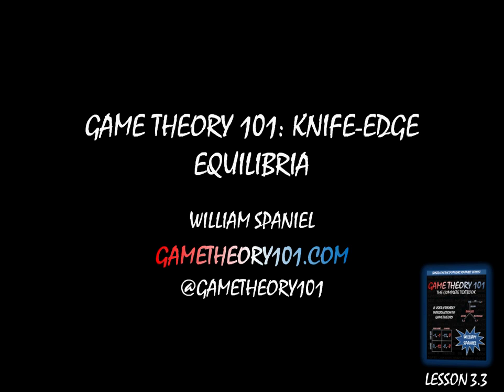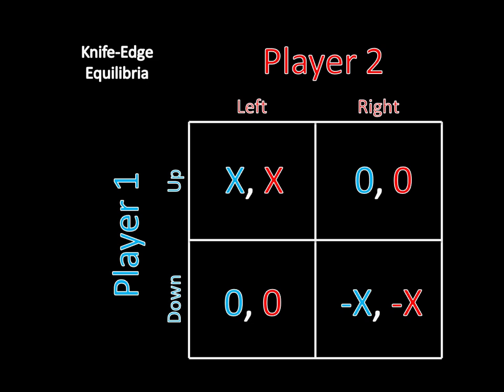The game that we're going to be looking at today is actually really simple to address this point. So the game looks like this. Both players have two strategies. Player 1 can go up or down. Player 2 can go left or right. If player 1 goes up and player 2 goes left, then they both get x. If player 2 goes right and player 1 goes down, they both get negative x, and otherwise they both get zero.